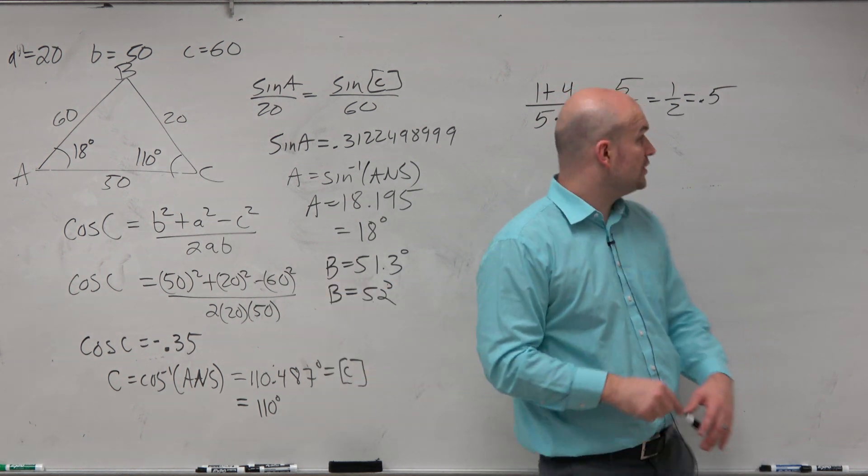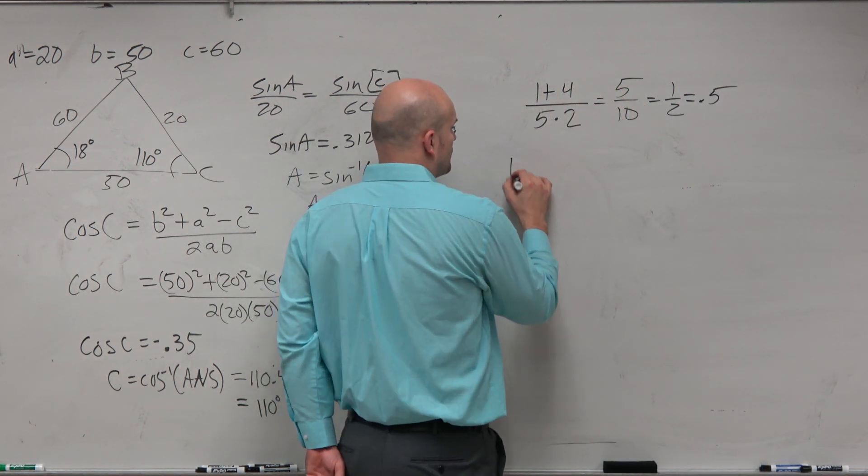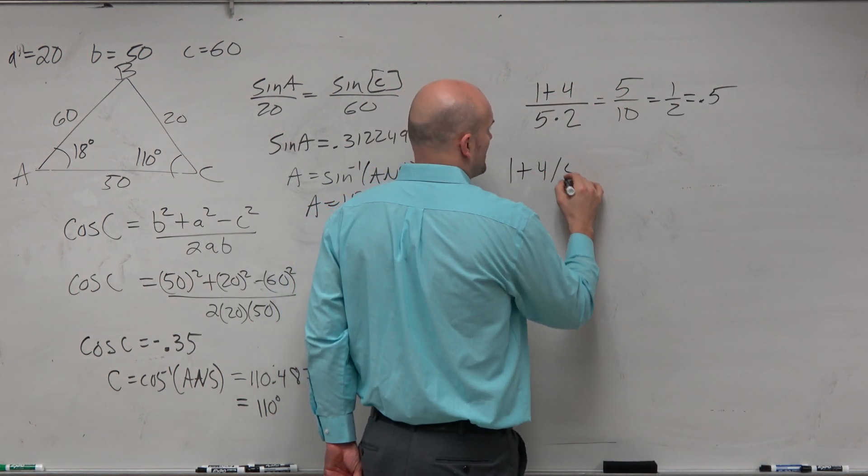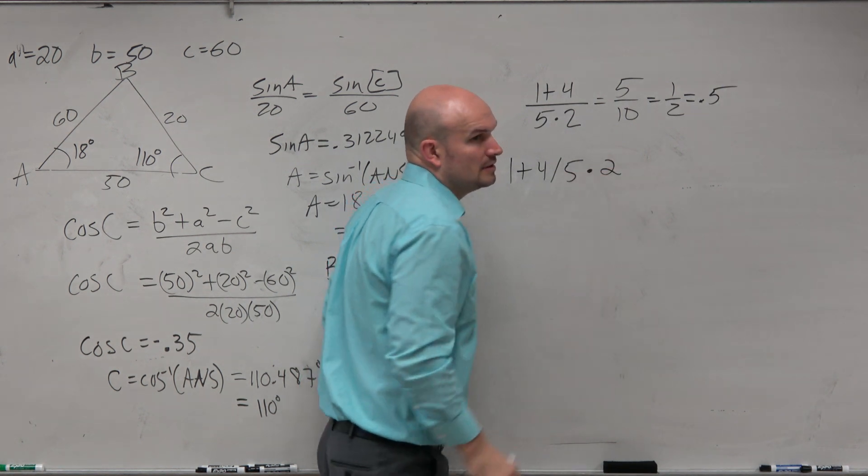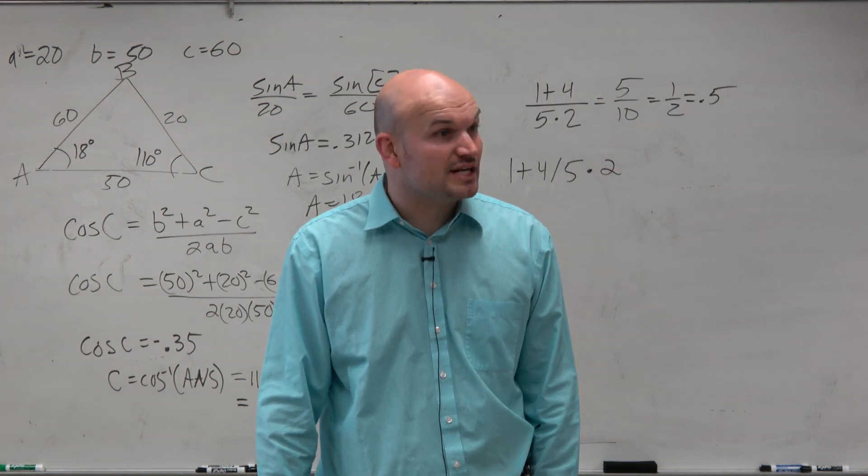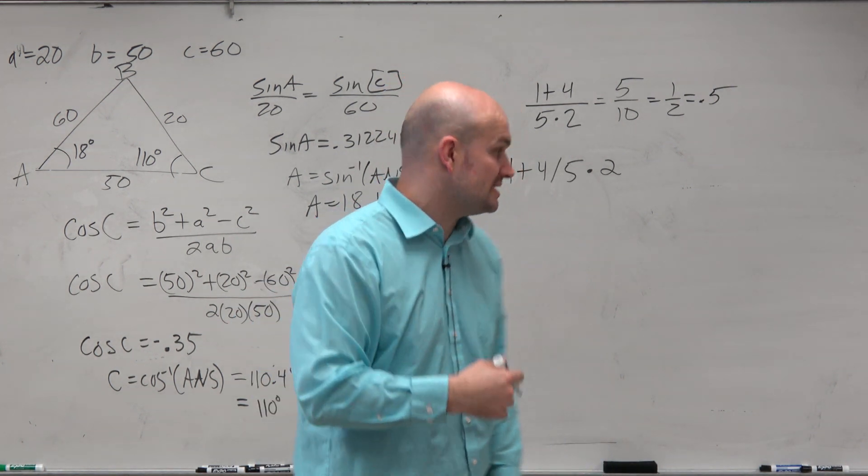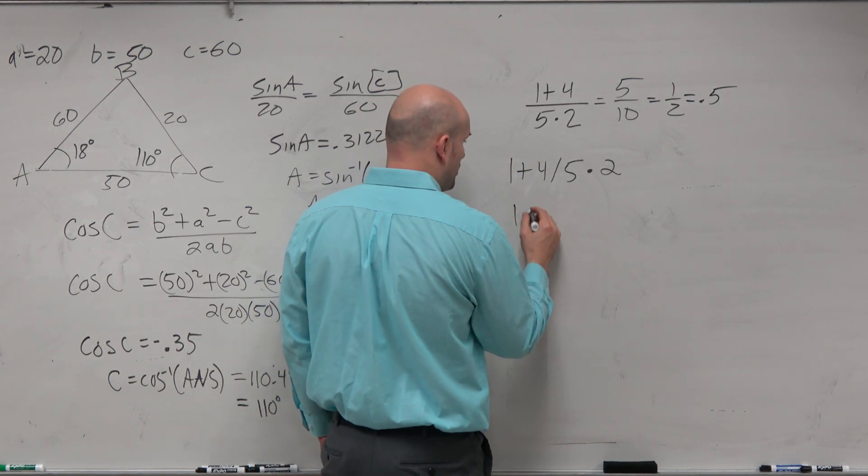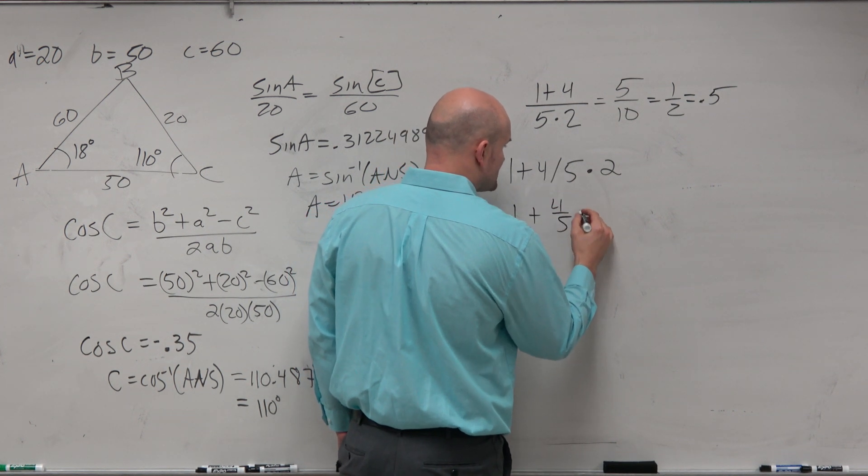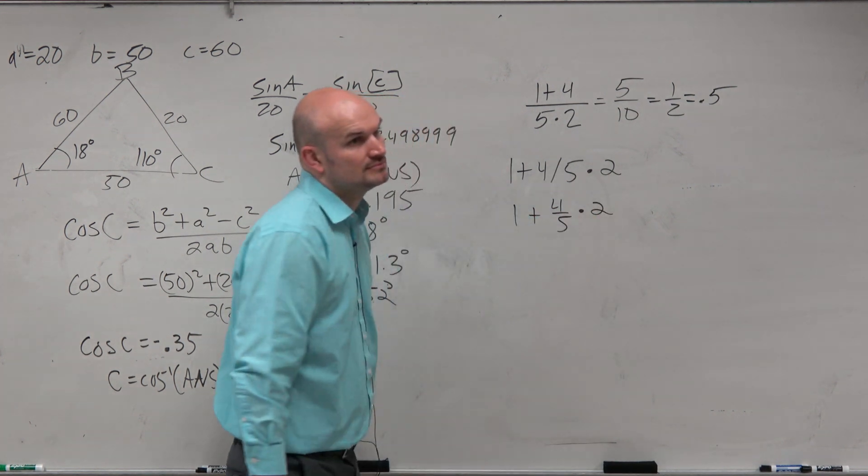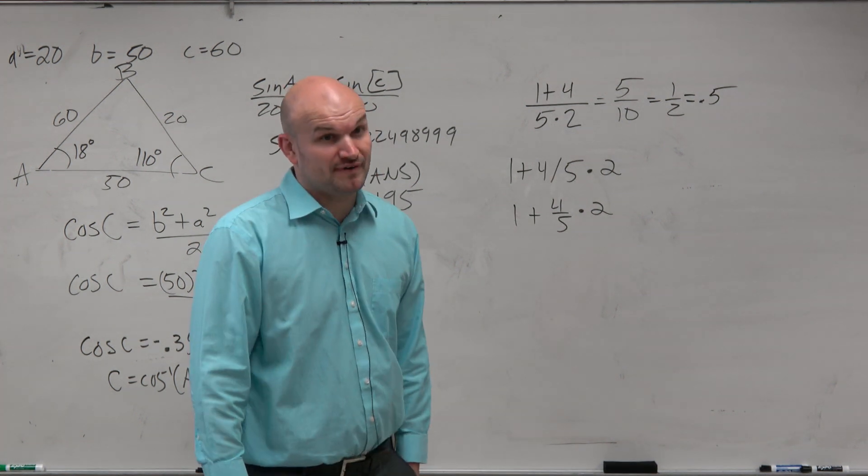Because what a lot of people will do is they'll type it into their calculator like this: 1 plus 4 divided by 5 times 2. And unfortunately, your calculator is going to follow order of operations. It's going to do multiplication and division first from left to right. So what your calculator is going to do is 1 plus 4 fifths times 2, which is not equal to 0.5.